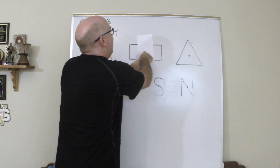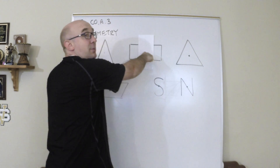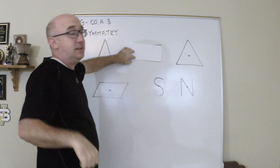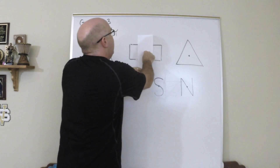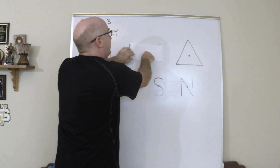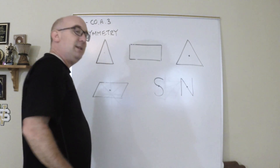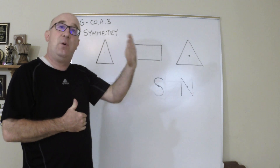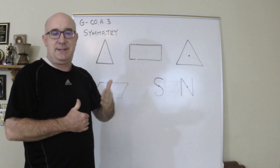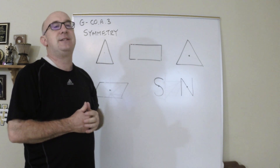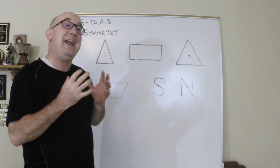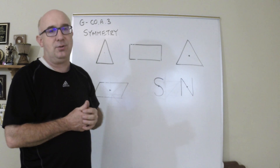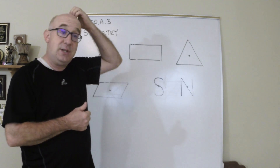Here is our rectangle. As we begin to rotate it 90 degrees, we don't match up. We rotate it 180 — we hit it! We go to 270 and we're not there, then back to 360. This has an order of two and an angle value of 180. We use the smallest angle that produces the rotational symmetry.